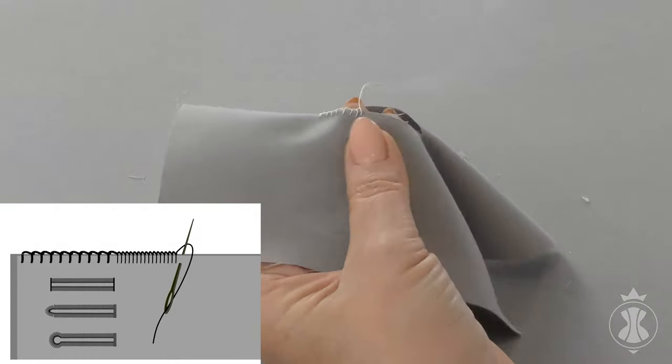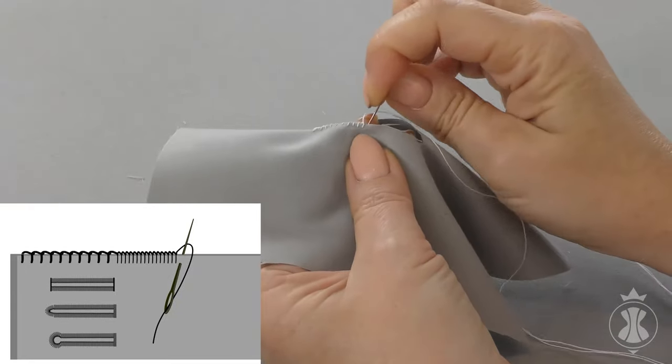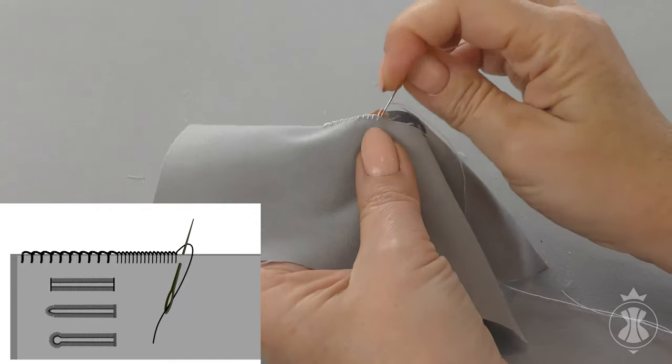To do the buttonhole stitch, you should sew 6 to 10 stitches per centimeter, each 2 to 3 millimeters wide.